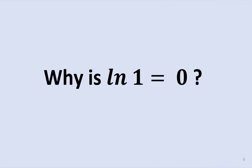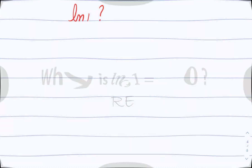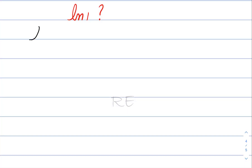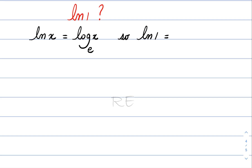Why is the natural logarithm of 1 equal to 0? In general, the natural logarithm of x is equal to the log base e of x. Therefore, the natural logarithm of 1 is equal to log base e of 1.